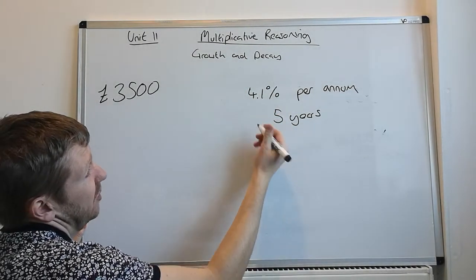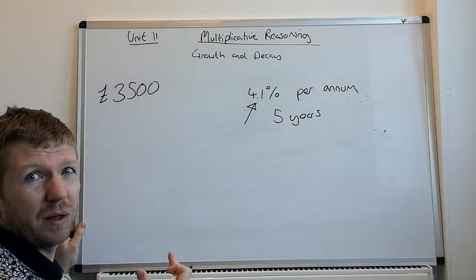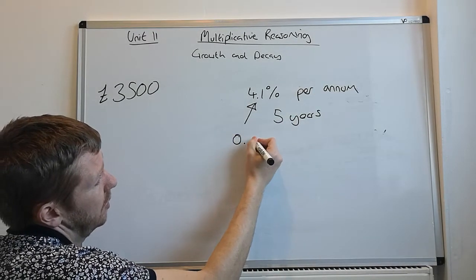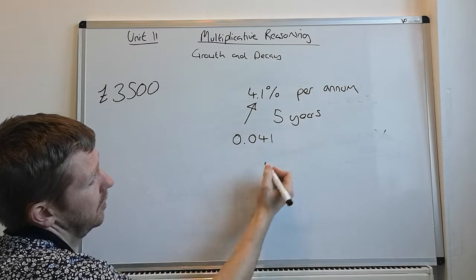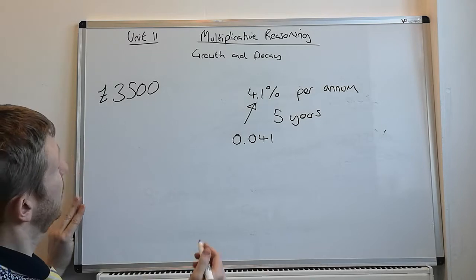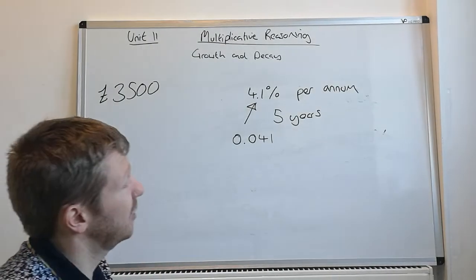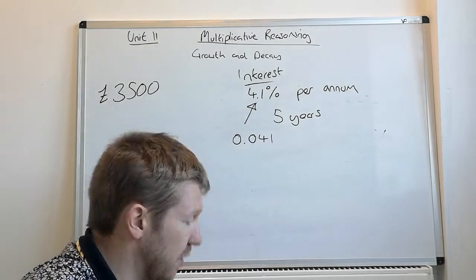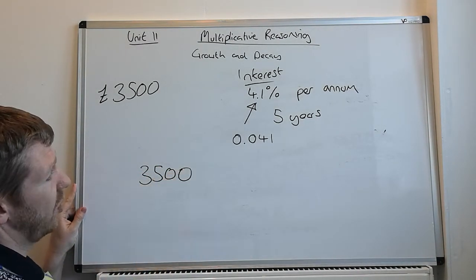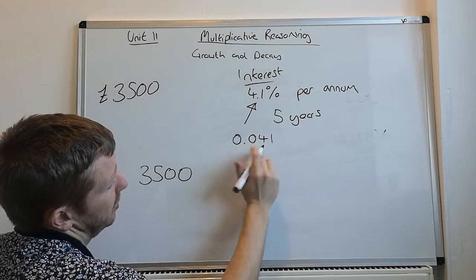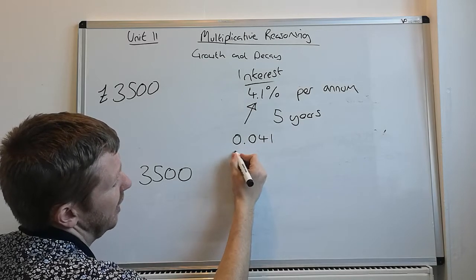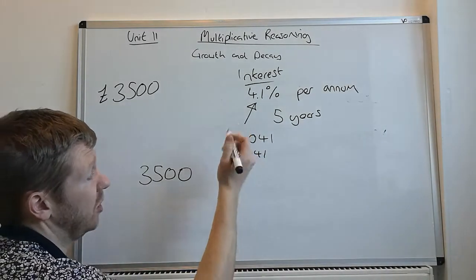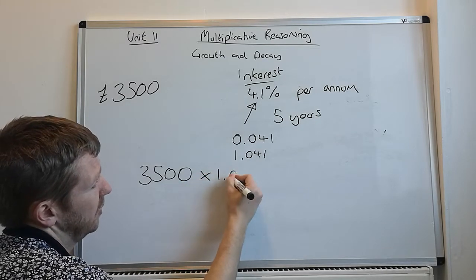So, what you're going to do is think, what is that as a decimal? Now, as soon as you put 0.1, people get a little bit confused about that. But all you need to do is move the numbers two places to the right. So, if it was 4%, it would be 0.04. So, 4.1 is 0.041. But, it's an investment and it's interest. The fact that it says interest means it's generally getting bigger. So, 3,500 is what your starting point is increasing by 4.1%. We need to have it as 1.041. Remember, the 1 means it stays the same. 1.041 means it's going to increase by 4.1%.